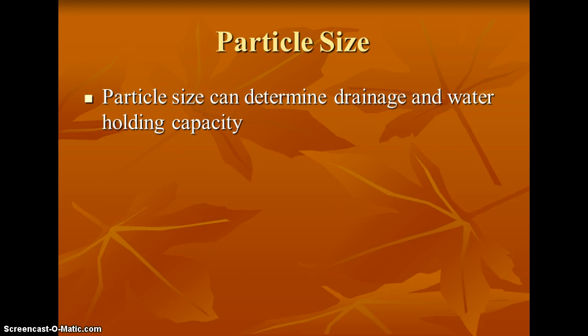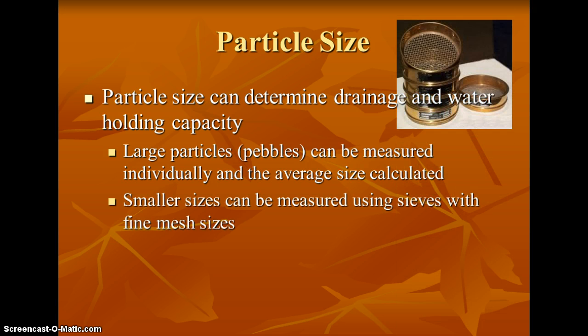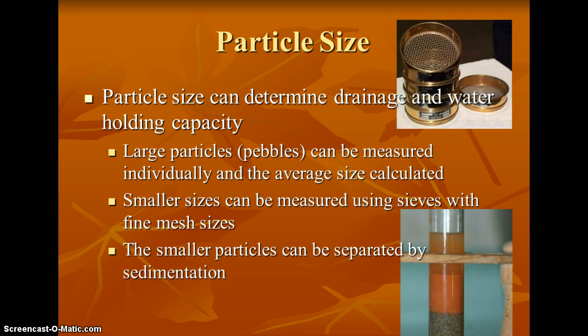Particle size refers to the texture of the soil — what size particles of mineral matter are present. This determines how quickly a soil will drain or how well it will hold water. Larger particles can be measured with a ruler to find an average size. For smaller sizes, we use sieves — each sieve has a different mesh size; you dump your soil on top, shake it, and it separates based on sediment size. We can also use sedimentation to separate smaller particles like clay and silt, which are too small to be caught by a sieve.